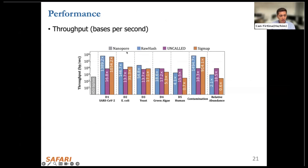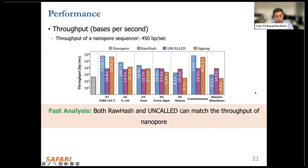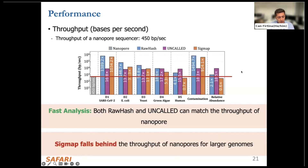I'll first show the performance results. This figure shows the throughput results of each tool. The throughput of a nanopore device is usually around 450 bases per second. What we observe is that both RawHash and Uncalled can match the throughput of nanopore for all datasets. Sigmap falls behind the throughput of nanopore, especially for large genomes — for human genome it falls behind, and also for relative amounts estimation including multiple datasets. This means Sigmap cannot be used for real-time genome analysis for large genomes.